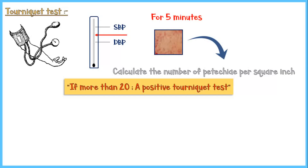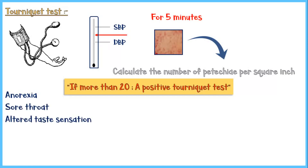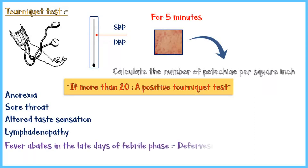In addition to the above signs and symptoms, the patient may have anorexia or loss of appetite, sore throat, altered taste sensation, and lymphadenopathy. As the patient reaches the late days of the febrile phase, fever starts to drop — this is known as defervescence, and is due to the cessation of viremia. However, some patients may show warning signs of progression into severe dengue around the time of defervescence.